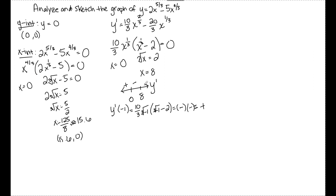For values greater than 8, I pick 27 since I know its cube root. The cube root of 27 is 3 times 10/3 is positive. The cube root of 27 is 3 minus 2 is positive. Positive times positive is positive. So y prime is positive beyond 8. This tells me y is increasing from negative infinity to 0 and from 8 to infinity, and decreasing from 0 to 8. I have a relative maximum at (0, 0), which I already found from the intercepts.